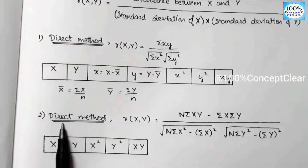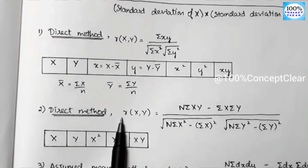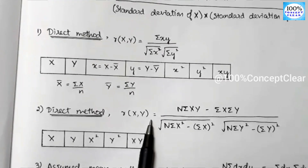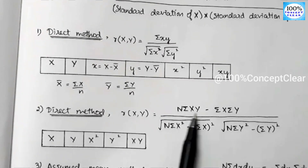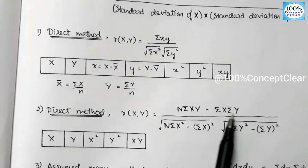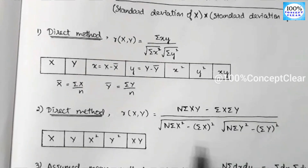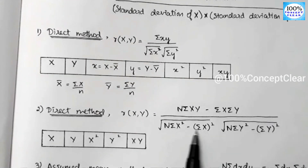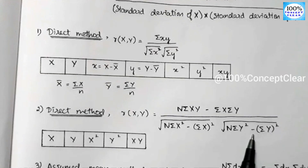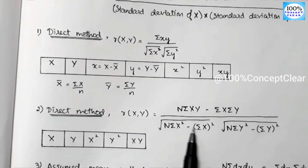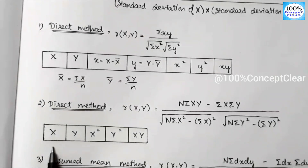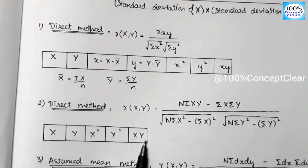The second method is the direct method. The formula is: r(x, y) = n × Σxy − Σx × Σy, divided by the square root of [n × Σx² − (Σx)²] multiplied by the square root of [n × Σy² − (Σy)²]. For this method, we use the columns x, y, x-squared, y-squared, and xy.